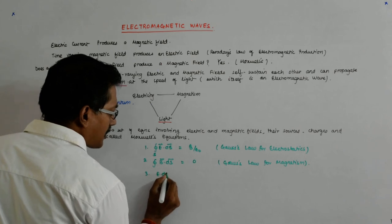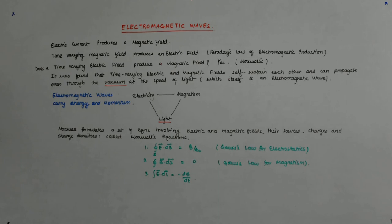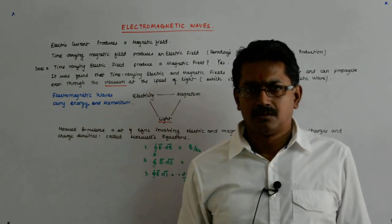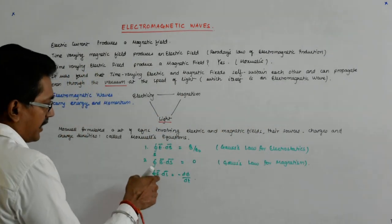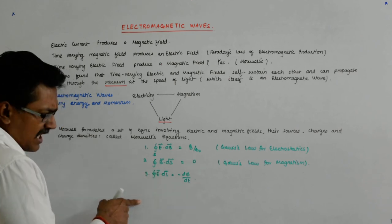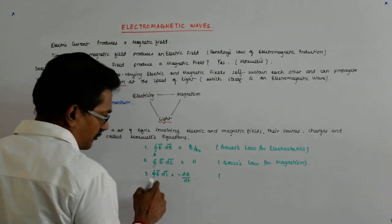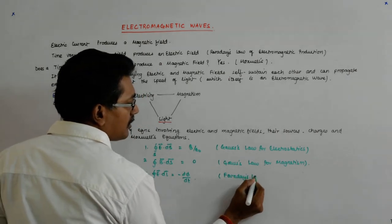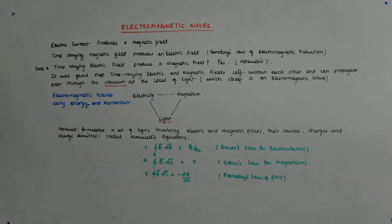The third Maxwell equation is E·dL = −dΦ/dt. Here E·dL represents voltage, since for a unit charge F·dL gives the potential. So this is V = −dΦ/dt — this is Faraday's law of electromagnetic induction, or EMI — not the equated monthly installment!